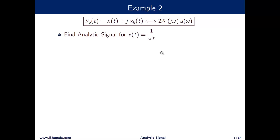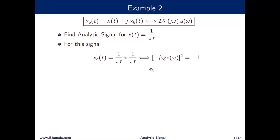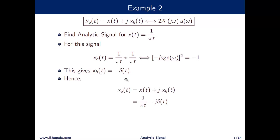As the next example, take x(t) = 1/πt. Evaluating the Hilbert transform in the time domain is tricky, so we work in the frequency domain where convolution becomes multiplication. The Hilbert transform of 1/πt has Fourier transform (−j·sgn(ω))², which simplifies to −1. Taking the inverse Fourier transform, the Hilbert transform of 1/πt is −δ(t), so the analytic signal is 1/πt − j·δ(t), and in the frequency domain this equals −2j·u(ω).